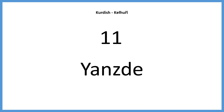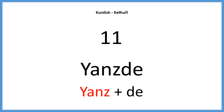The numbers from 11 to 19 are quite simple. Each of these numbers have the number 10, deh, as the suffix — so at the end of the word. For example, the number 11 would have 'yans' representing yek, the number 1, followed by the suffix deh.